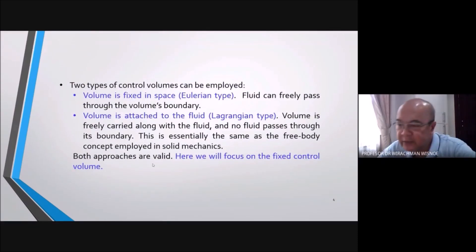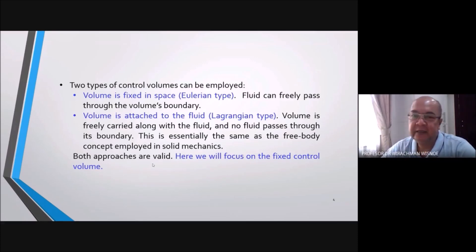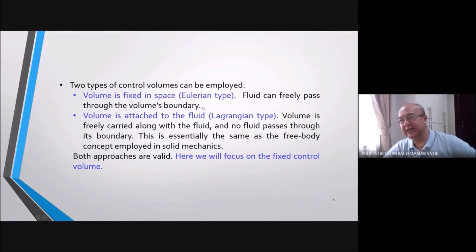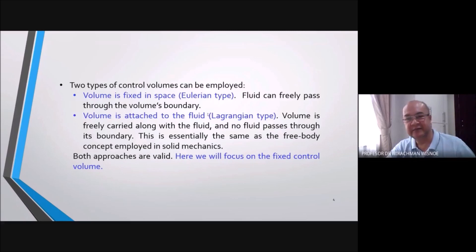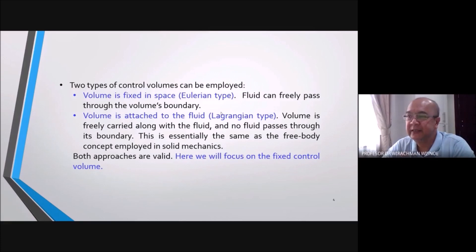There are two types of approaches to analyze fluid flow. In the Eulerian type, you stand on a bridge above a highway and watch cars passing — you analyze the flow at a fixed location. In the Lagrangian type, you go inside a car and travel with it; each observer analyzes their own particle. Treating cars as fluid particles, one car may travel to the right and another to the left — that is the Lagrangian type.